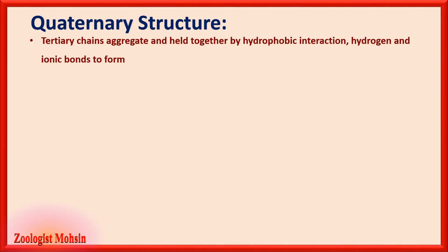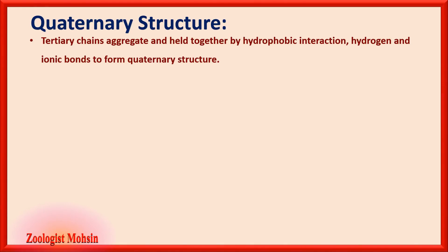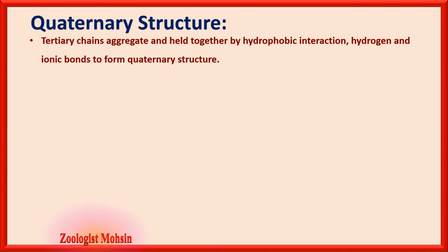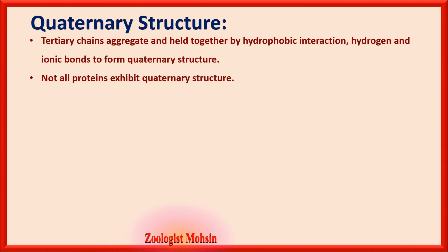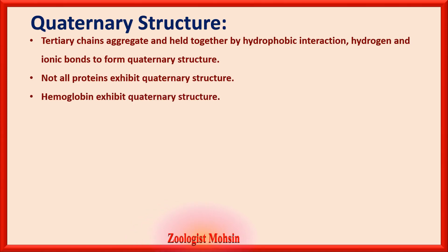Quaternary structure: tertiary chains aggregate and are held together by hydrophobic interactions, hydrogen bonds, and ionic bonds to form the quaternary structure. Not all proteins exhibit quaternary structure — this is a very important fact. Quaternary structure is shown only by a few large proteins, for example hemoglobin.